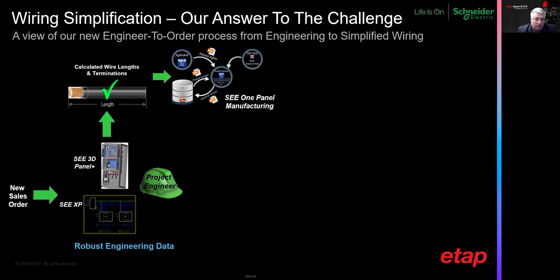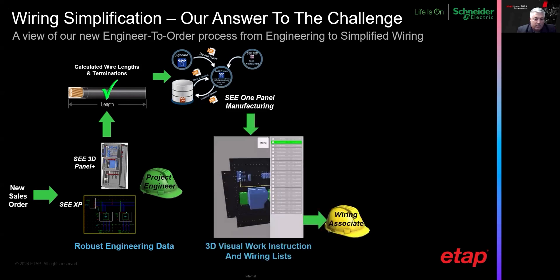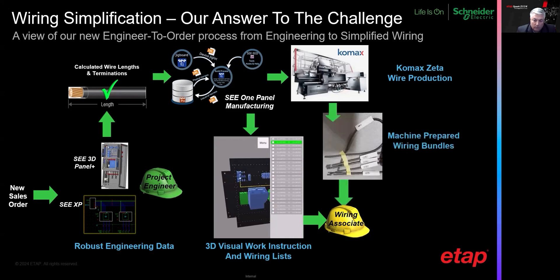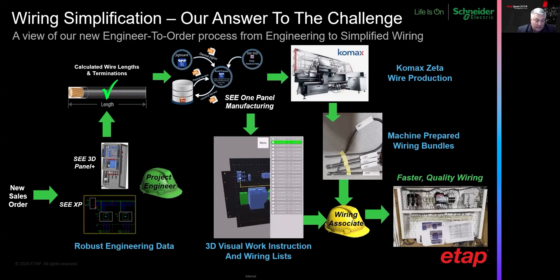We're using the C1 Panel Manufacturing software — previously known as C Harness Manufacturing. This software takes all of that engineering data and prepares it through transformations in a number of ways. One, we actually generate work instructions that are passed on to our wiring personnel on the shop floor. We also use it to generate machine instructions. We're actually driving a Comax Zeta 650 to generate wire bundles that are sequenced in order of installation, cut, strip, labeled, and lugged — we do have the ability to choose the proper lugs for each termination. All of that is handed off to our wiring associates, who are then able to do wiring faster and also with higher quality.